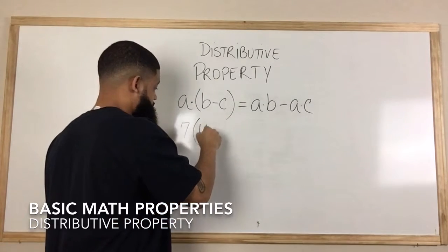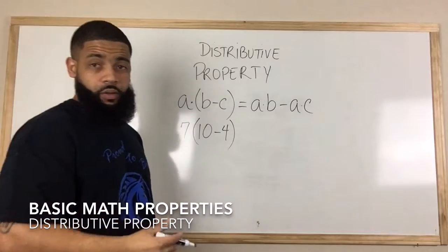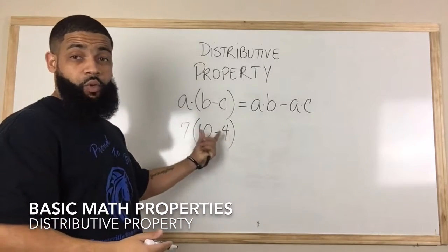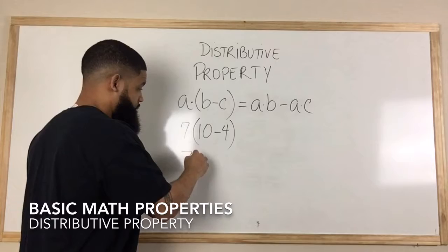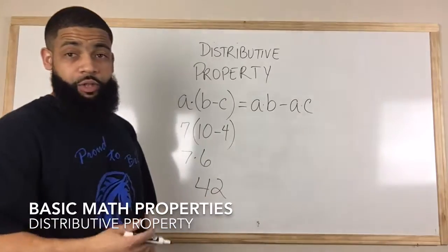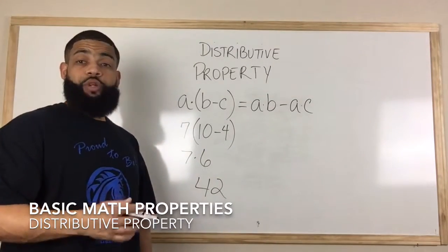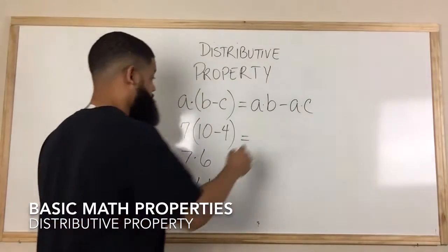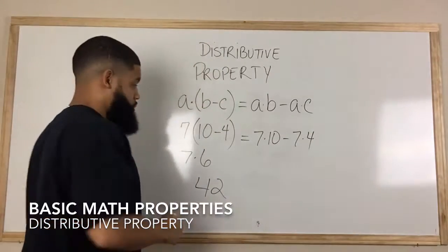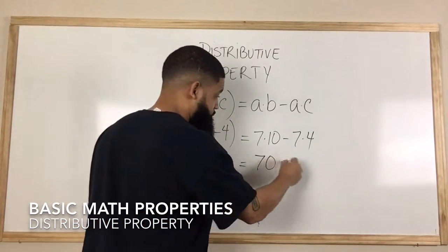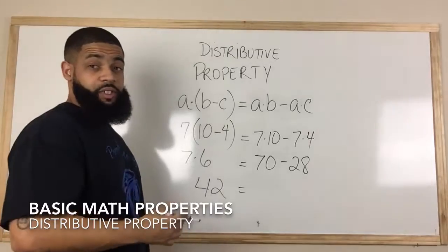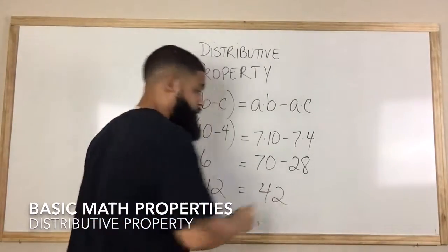According to order of operations, we would subtract what's in parentheses first, so I would get 7 times 6, which is 42. If we do this according to the distributive property, we would get 7 times 10 minus 7 times 4. 7 times 10 is 70, 7 times 4 is 28, and if we take 70 minus 28, we will still get 42.